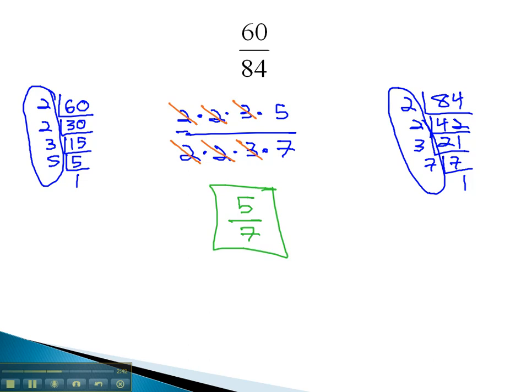Some people would rather take a look at a problem like this though, and instead of going through the work of finding the prime factorization like we did here, you might be able to identify what those common factors are by just looking at the 60 over 84. We might have been able to see that they're both divisible by 2 because they both end in an even number.